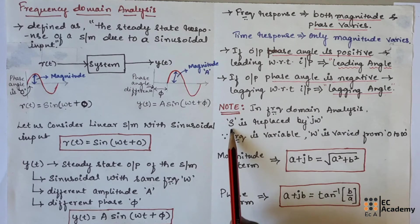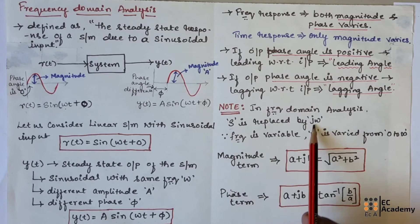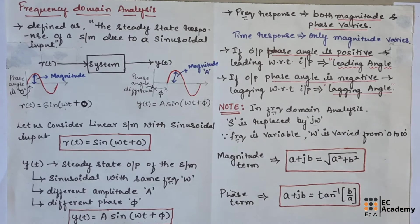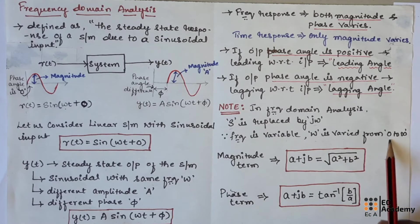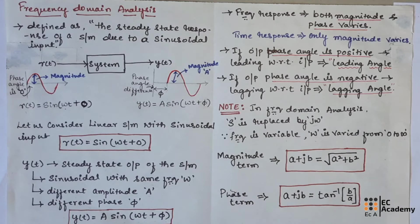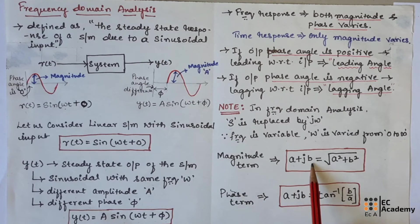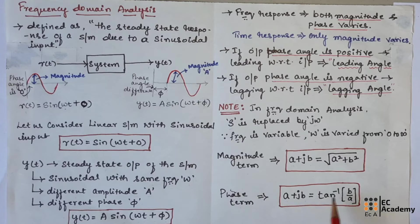In frequency domain analysis, always remember we will replace S by jω in the transfer function, and then find the frequency response. Since frequency is the variable, ω is varied from 0 to infinity. Also remember: to find the magnitude of a term in the form (a + jb), we compute √(a² + b²). To find the phase term of (a + jb), we compute tan⁻¹(b/a). This is how you find the magnitude term and phase term.